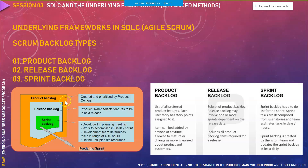Product backlog is created and prioritized by the product owner. Release backlog is where the product owner selects features for the next release. Sprint backlog is what the development team decides to assign to themselves. One important thing to highlight: whenever you are doing sprint planning, you don't assign things to the development team — team members self-assign based on their capacity and skills.